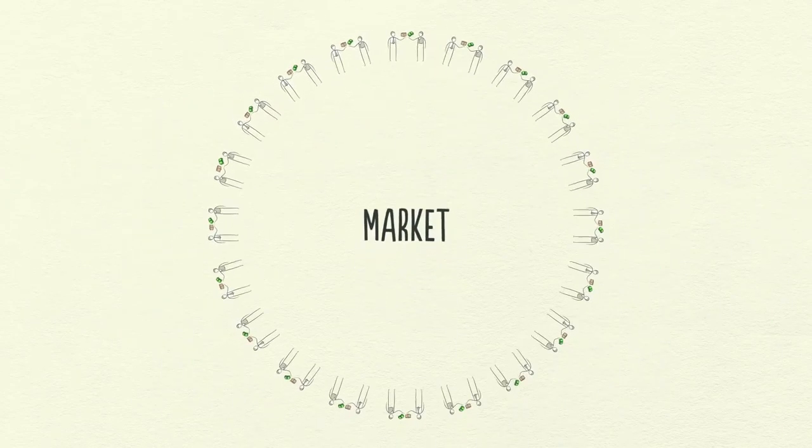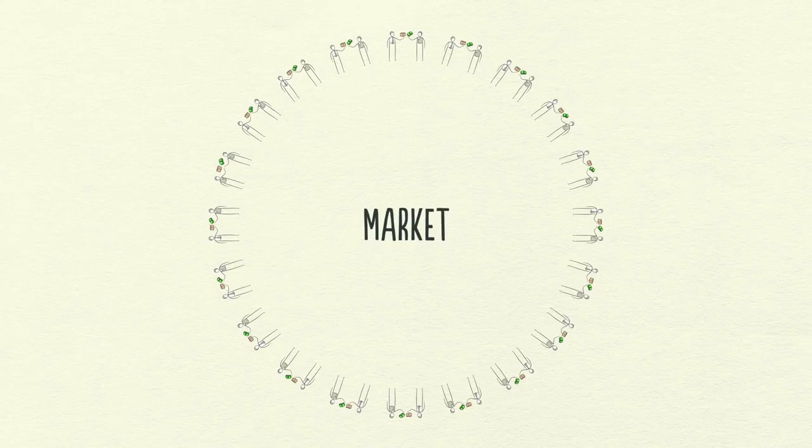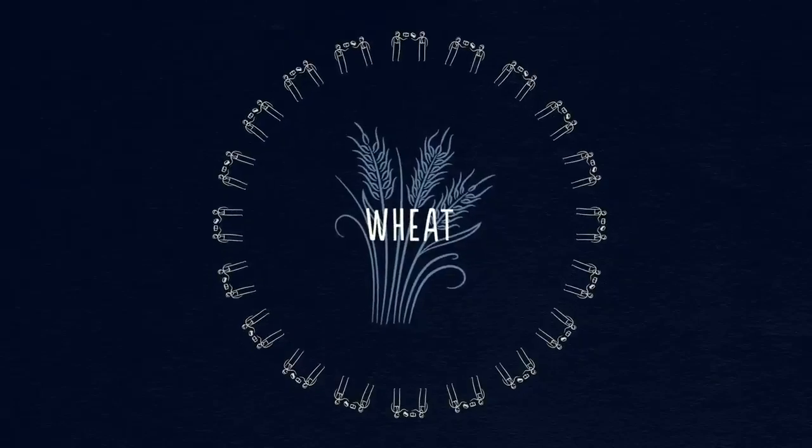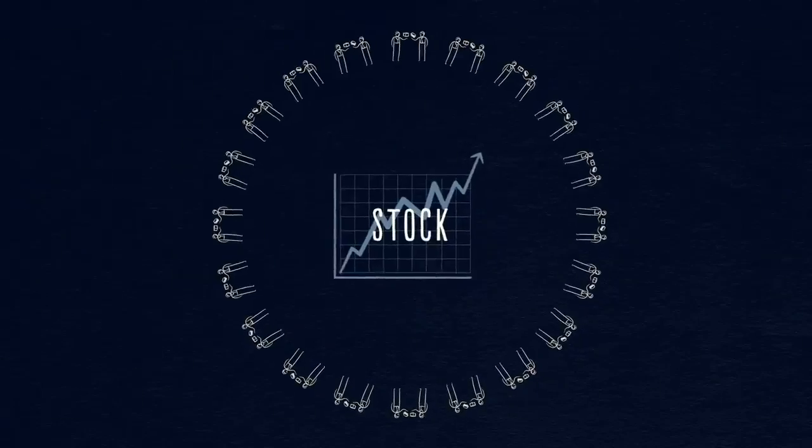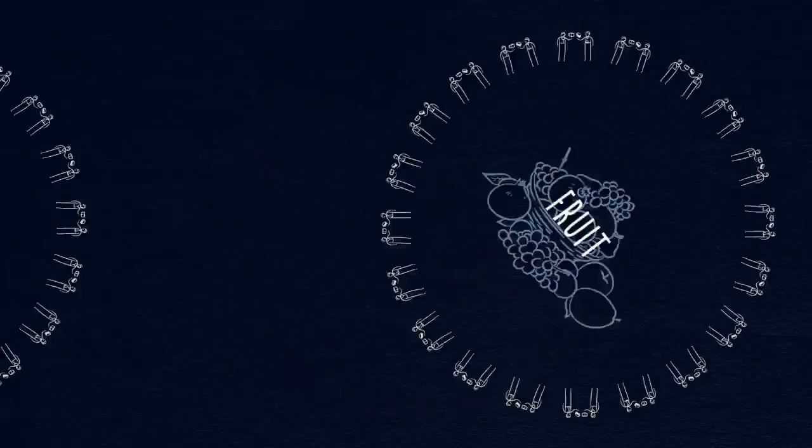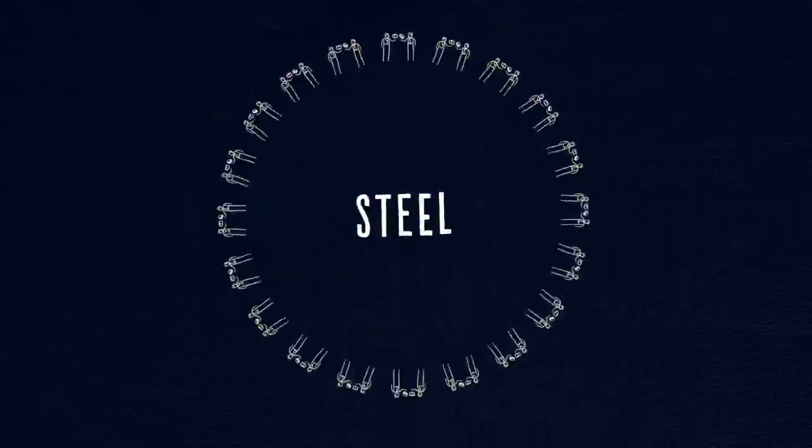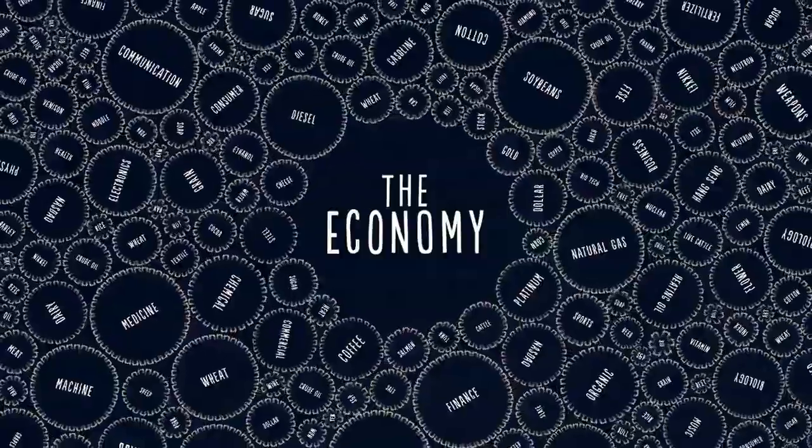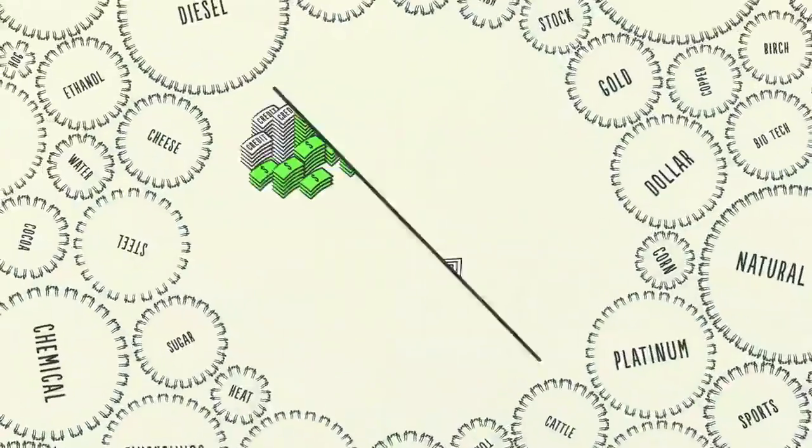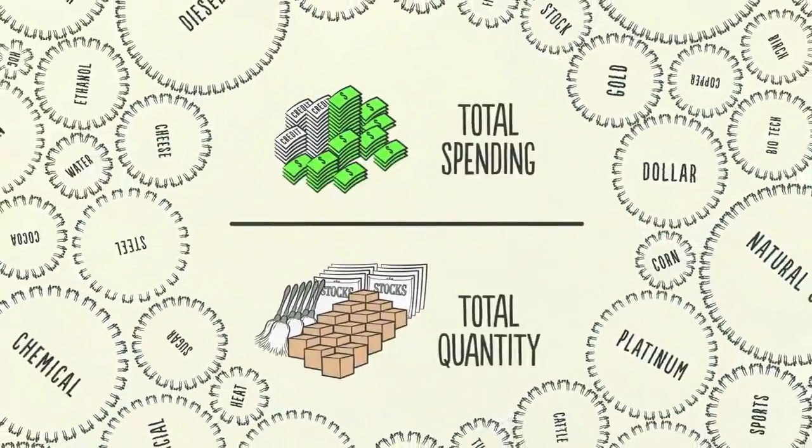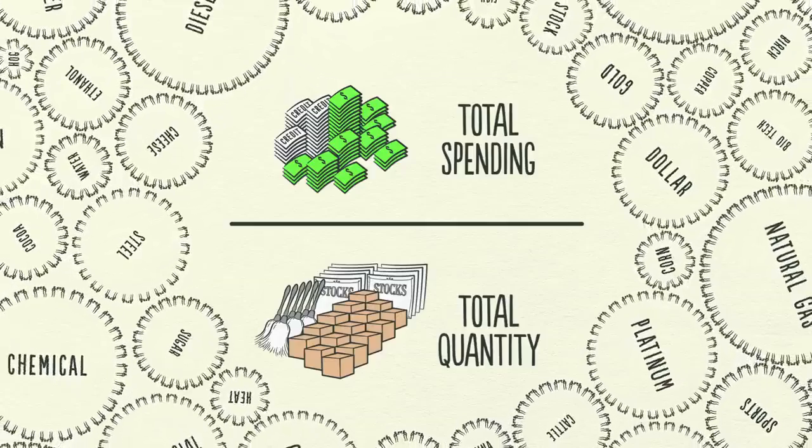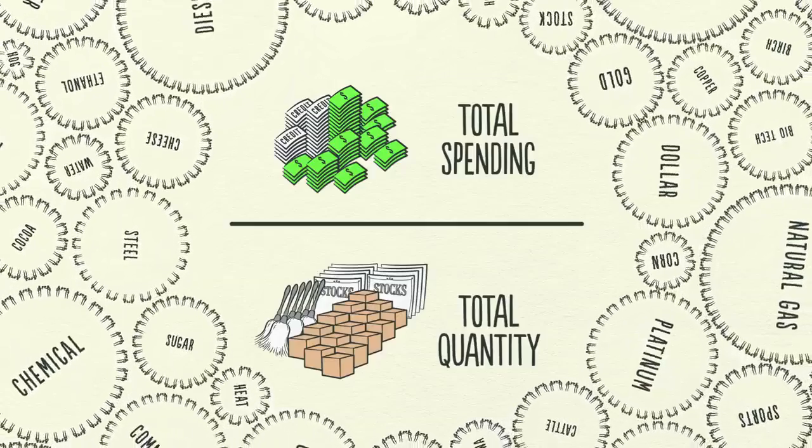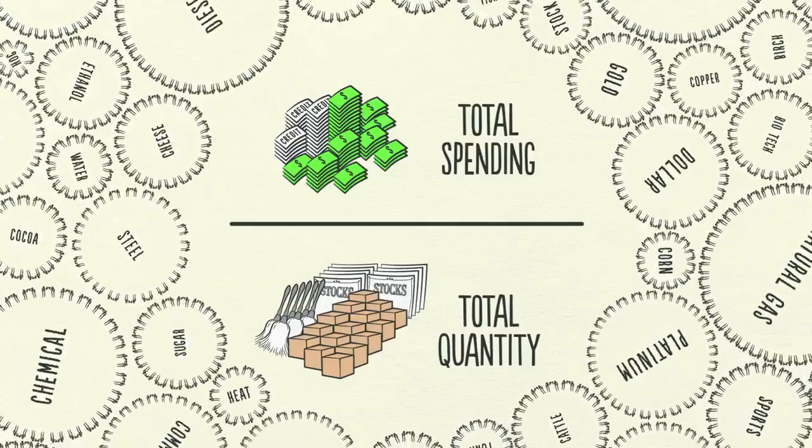A market consists of all the buyers and all the sellers making transactions for the same thing. For example, there is a wheat market, a car market, a stock market, and markets for millions of things. An economy consists of all of the transactions in all of its markets. If you add up the total spending and the total quantity sold in all of the markets, you have everything you need to know to understand the economy. It's just that simple.